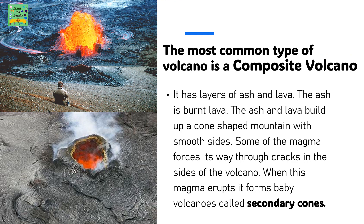The most common type of volcano is a composite volcano. It has layers of ash and lava. The ash and burnt lava build a cone-shaped mountain with smooth sides. Some of the magma forces its way through cracks in the sides of the volcano. When this magma erupts, it forms baby volcanoes called secondary cones.